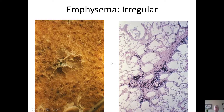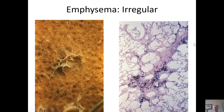Irregular emphysema is often seen adjacent to scars. In this case, it's a healed focus of tuberculosis, and you can see obvious airspace destruction present adjacent to it, with relatively normal lung adjacent to that. This is seen in the microscopic slide where the healed focus is a scar which has picked up some pigment, with enlarged airspaces next to it but relatively normal lung parenchyma further away from the area of abnormality.